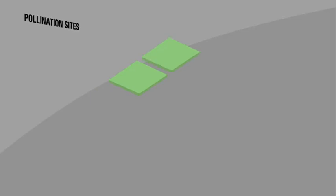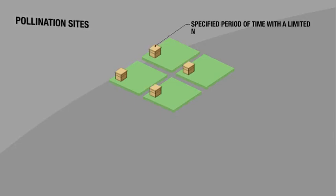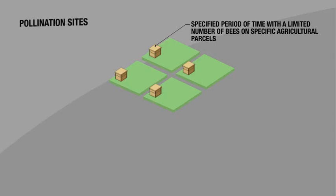There are also pollination sites. Pollination sites are established for a specified period of time with a limited number of bees on specific agricultural parcels for the purpose of pollination. That's a fairly unusual thing, and I'm not going to spend a whole lot of time on it. If you need a pollination site, you probably know about it. Get in touch with us and we'll walk you through the process.